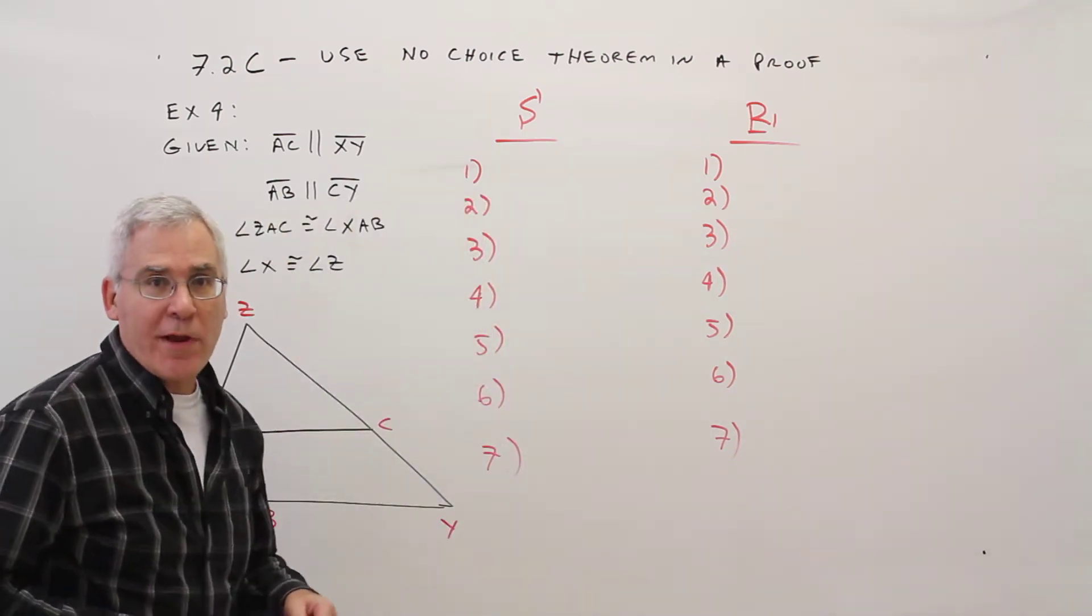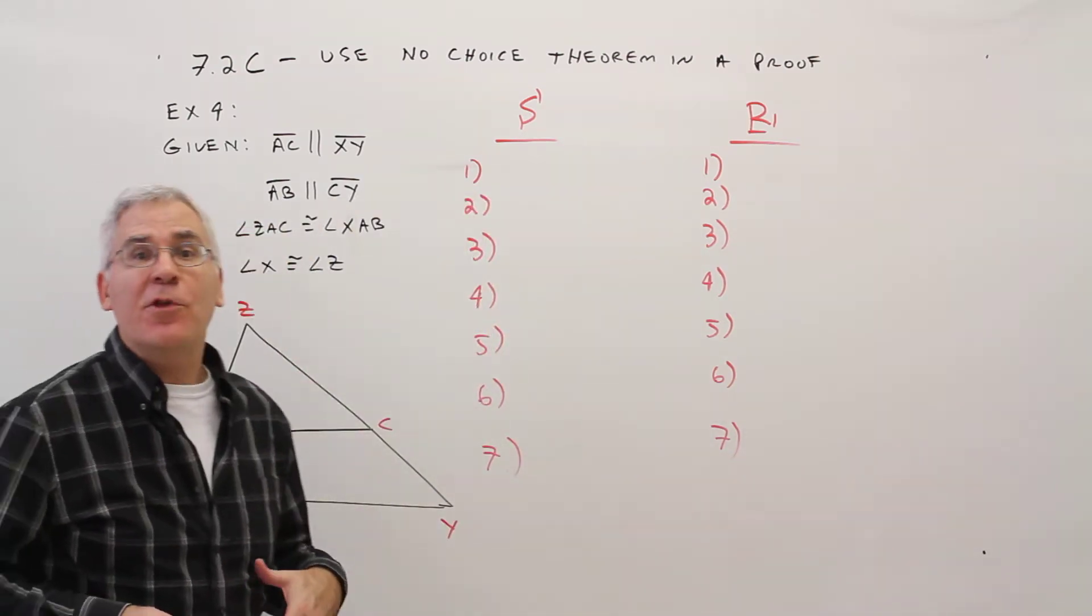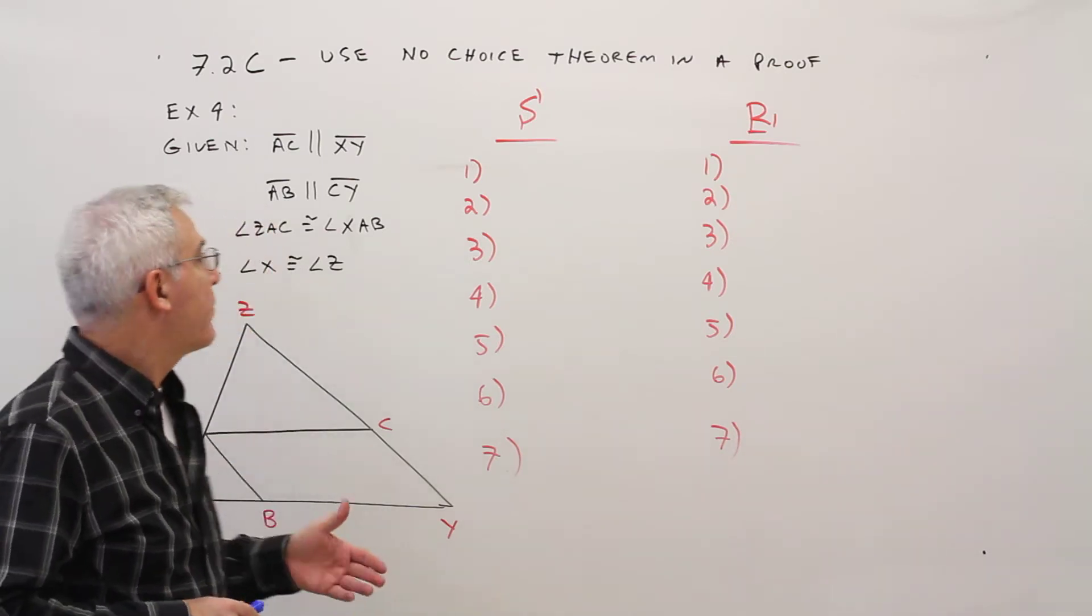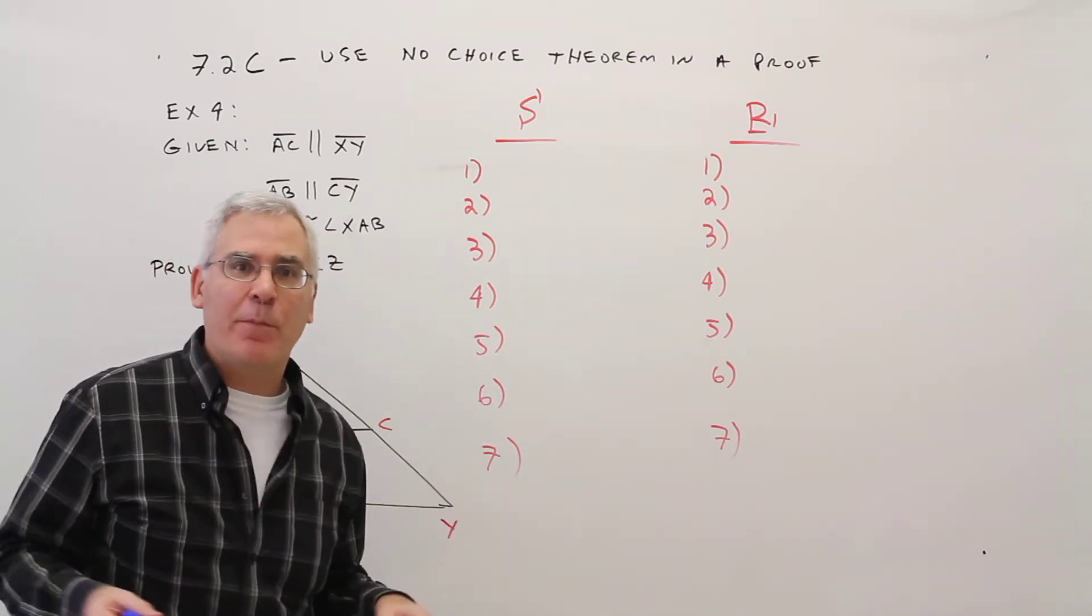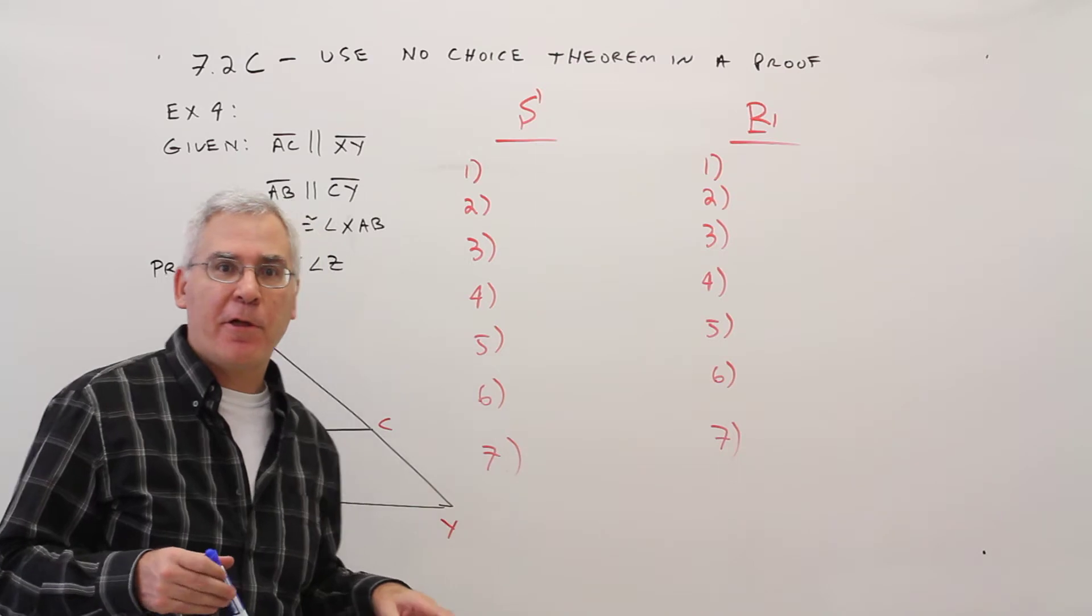Welcome to video 7.2c. Use the no-choice theorem in a proof. This is example 4. I'm skipping example 3 to keep the video length lower.